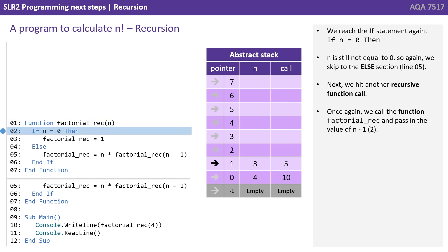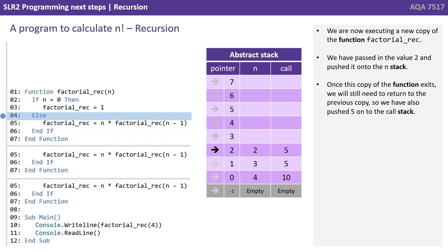We reach the if statement again: if n equals 0 — n is still not 0 — so again we skip to the else section, line 5. We hit another recursive function call; we call factorial_rec and pass in the value of n minus 1. n is currently 3, so n minus 1 is 2. We're now executing a new copy of factorial_rec. We've passed in the value 2 and pushed it onto the stack. Once this copy exits, we'll still need to return to the previous copy, so we've also pushed 5 onto the call stack.